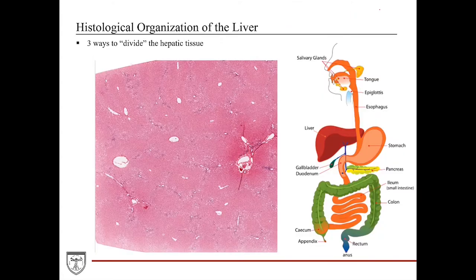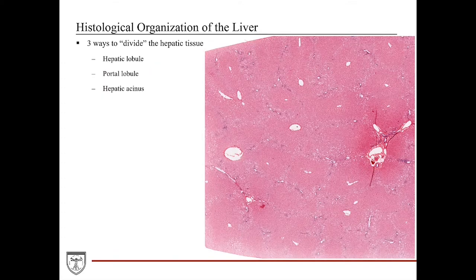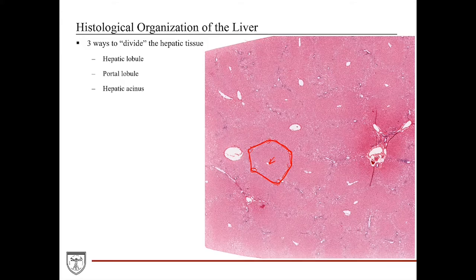There are three ways to divide hepatic tissue depending on anatomical or functional perspective. The hepatic lobule is a polygonal structural unit with the central vein in the center and portal triads at the corners of the hexagon. The portal lobule takes a triangular form with three central veins at the apices and one hepatic portal triad in the center, focusing on the direction of bile flow.